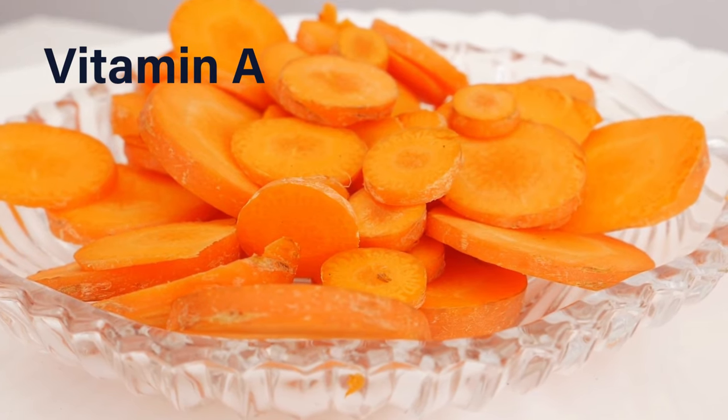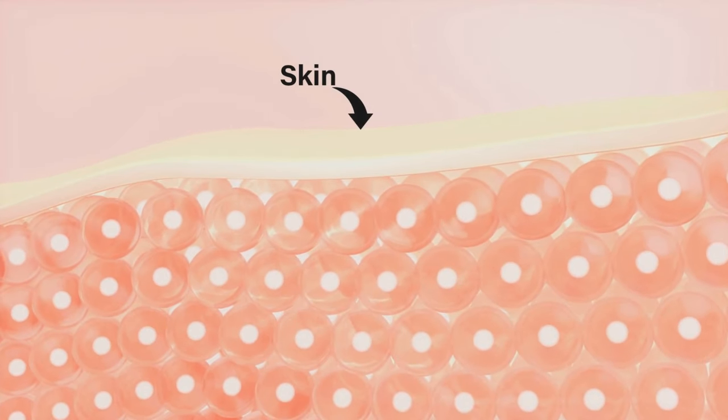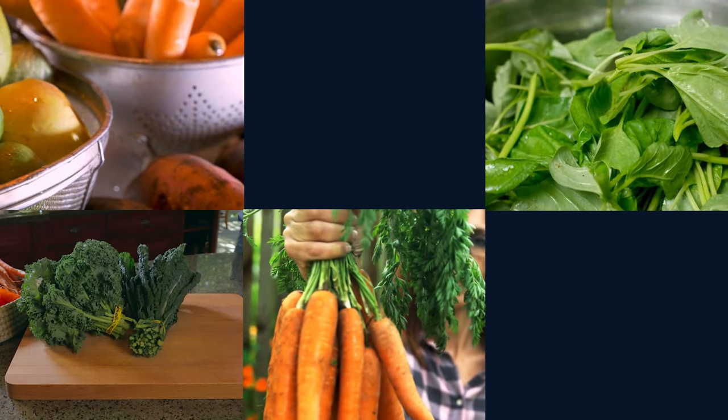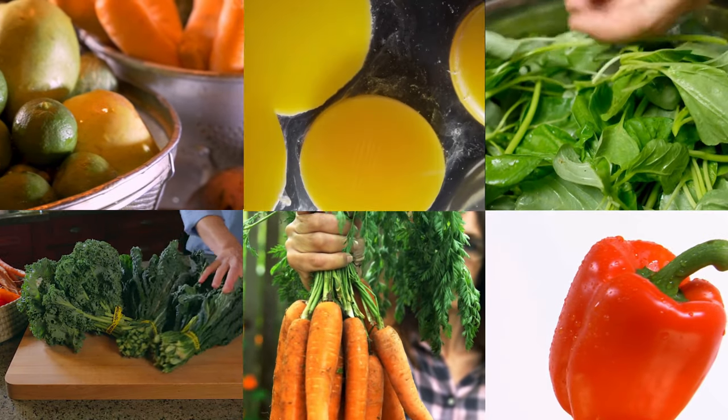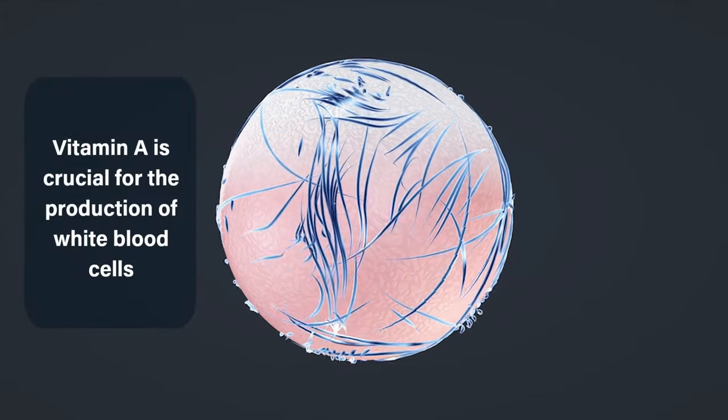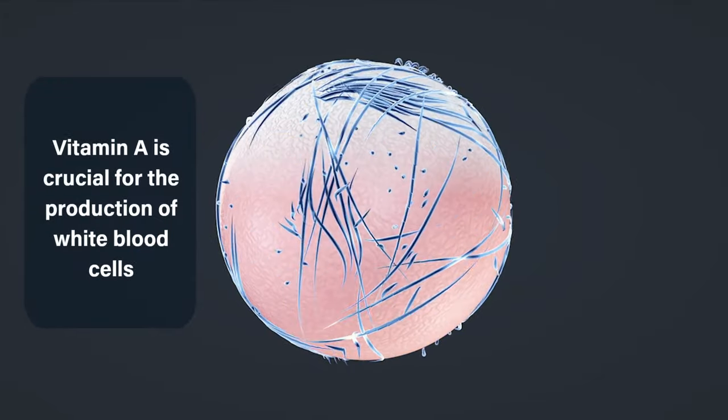Let's continue with vitamin A, which is critical for maintaining the health of the skin and mucous membranes, which act as a barrier against infections. Foods rich in vitamin A are sweet potatoes, carrots, spinach, kale, red bell peppers, and egg yolks. Vitamin A is also crucial for the production of white blood cells, contributing to a strong immune response.